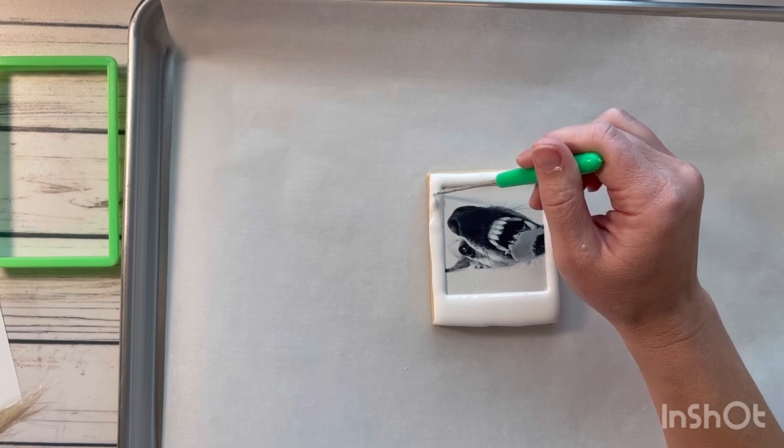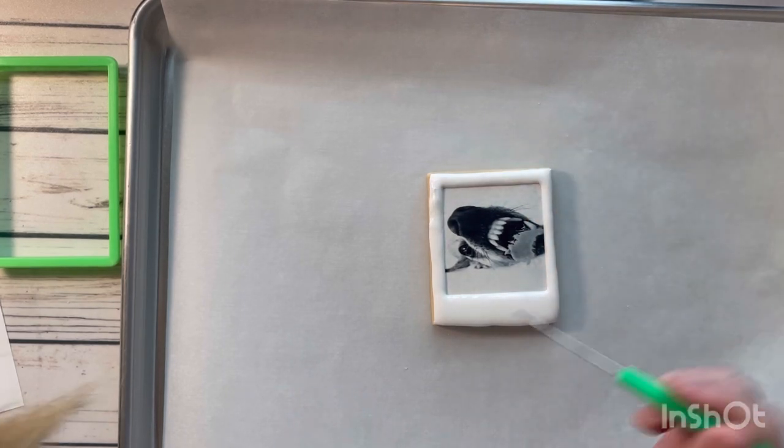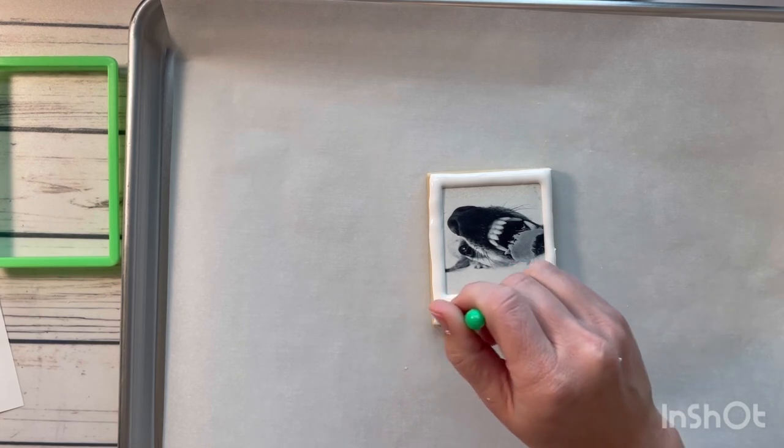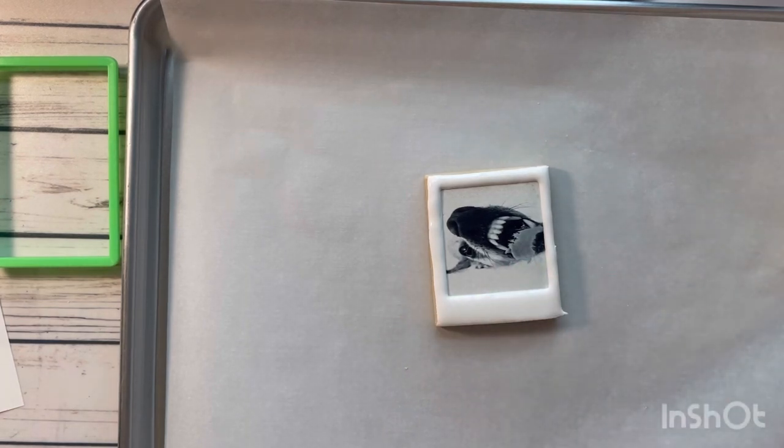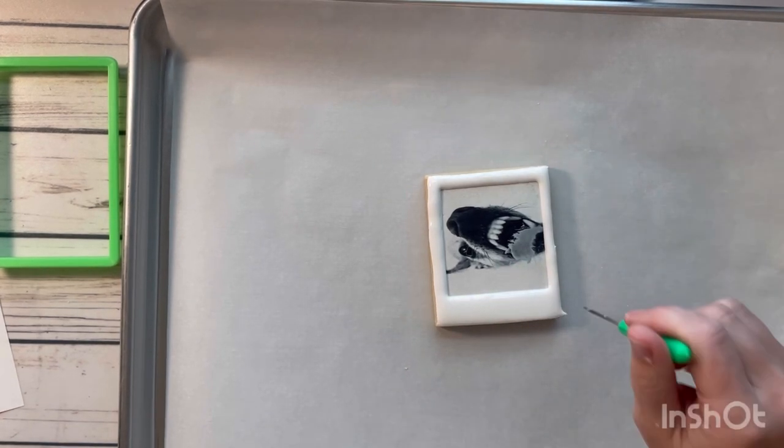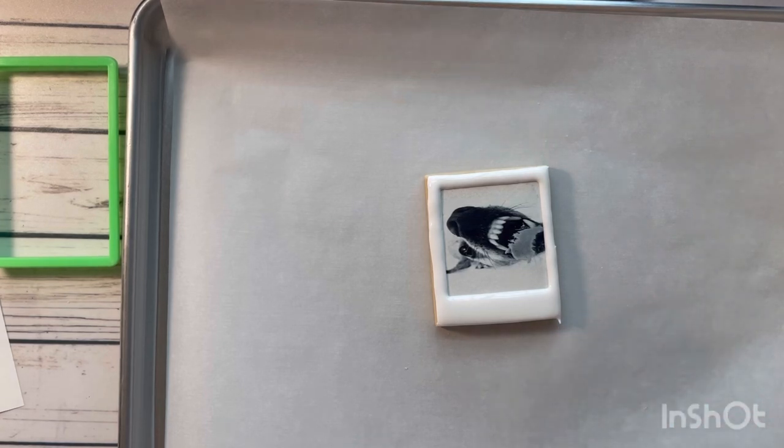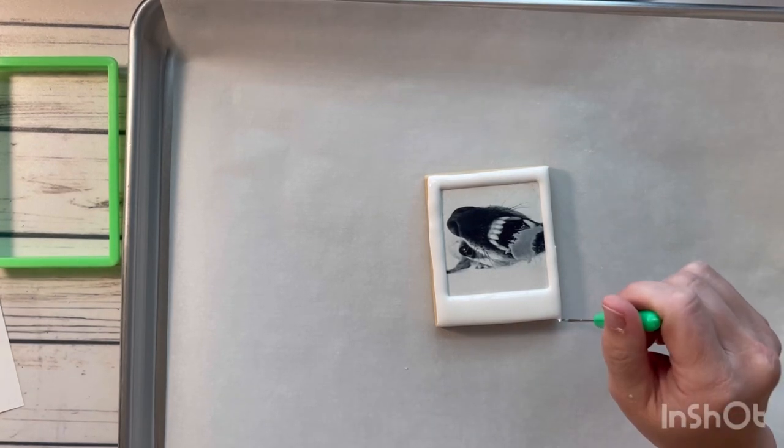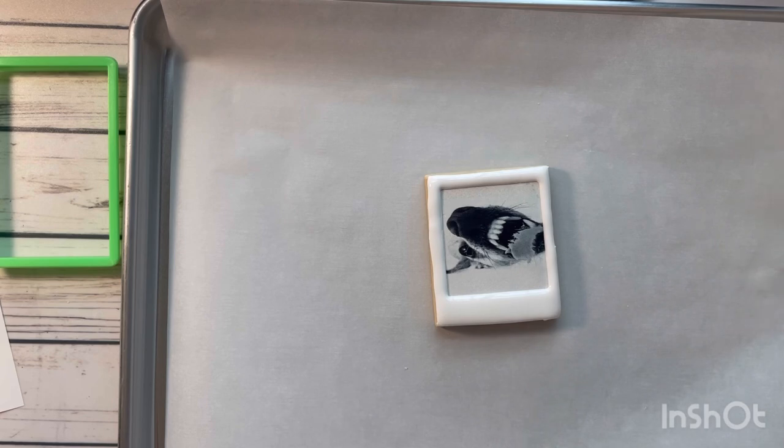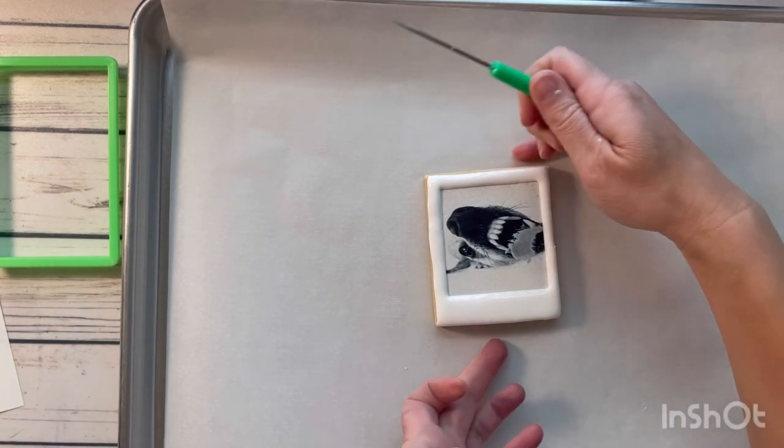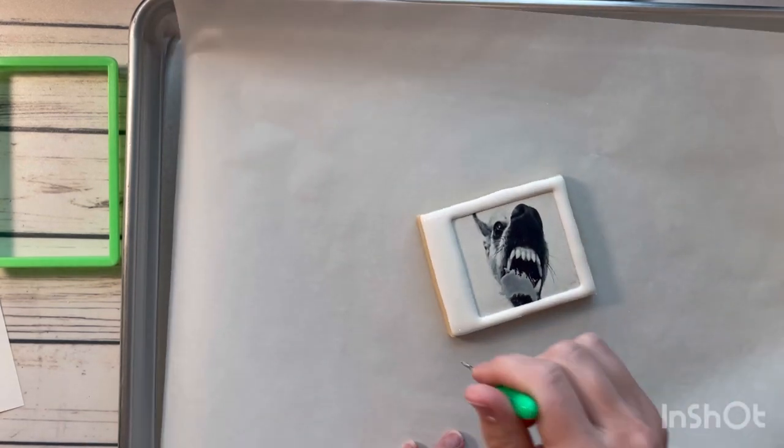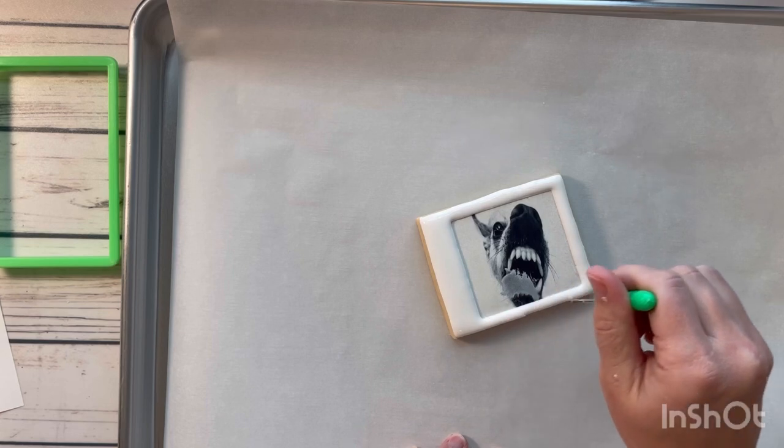So after I outlined it, you just saw me flood in the area I outlined, and I used kind of a little bit more of a thick flood there, not a thin flood, to fill in these areas. I'm trying to prevent it from cratering as much as I can on those sides, which sometimes is hard to prevent, but I just use my scribe to go in and distribute the flooded icing that I put into the outlined areas.